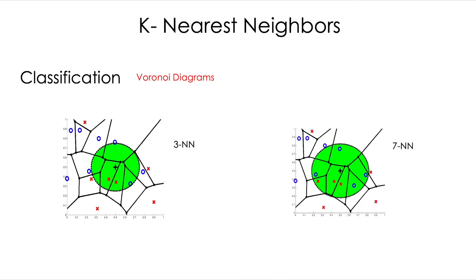What are Voronoi diagrams? In this example, we have two cases: three nearest neighbor and seven nearest neighbor, with points of two classes — blue circles and red crosses. If we want to classify the point with the plus symbol using three nearest neighbors, we draw a circle and increase the radius until we grab three points. In this case, those are two red crosses and one blue circle, so the classification for the plus symbol will be red cross.